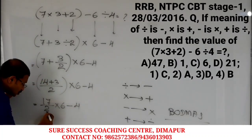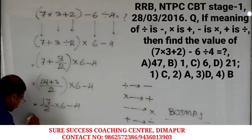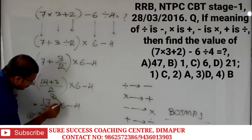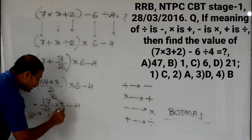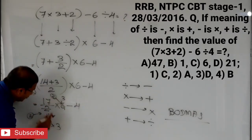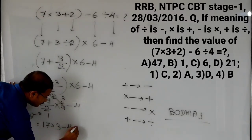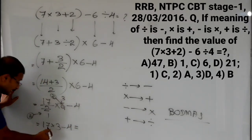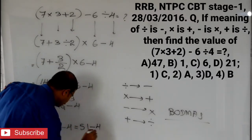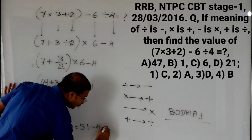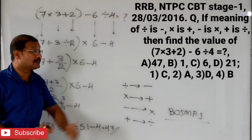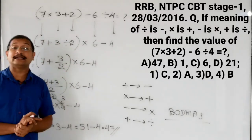After that, 2 and 6 cancel — 2 threes are 6 — giving us 17 into 3. So 17 into 3 minus 4. 17 threes are 51, so 51 minus 4 equals 47. The correct answer is A, 47 — that means the correct option is 2, that is A.